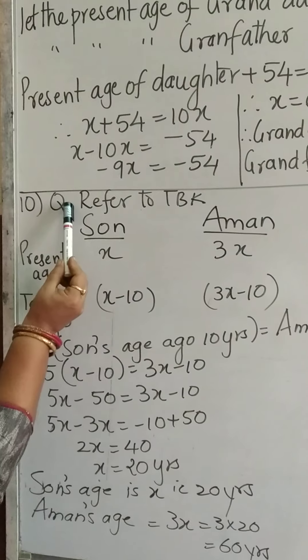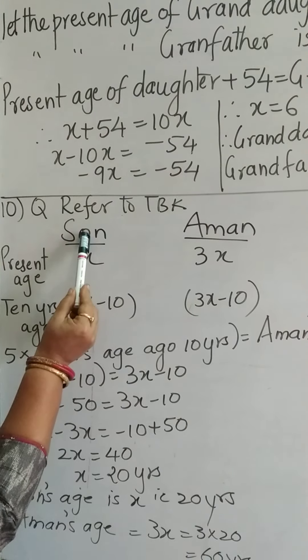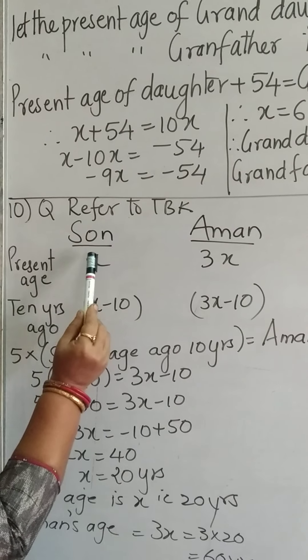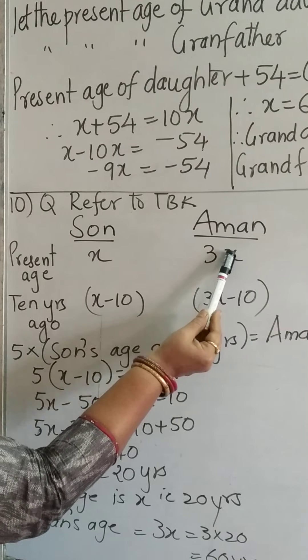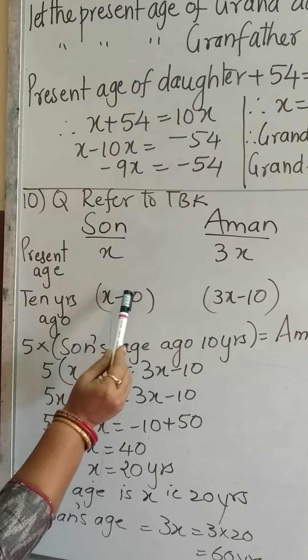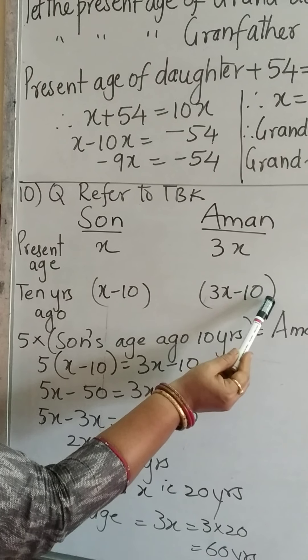Question number 10. Question number 10 is from the textbook. Son, Aman. Aman is father. Present age is x, Aman's is 3x. 10 years ago, so you will subtract that. x minus 10, 3x minus 10.